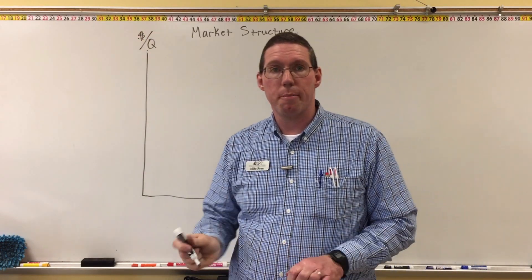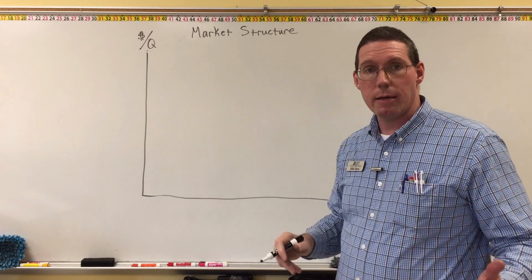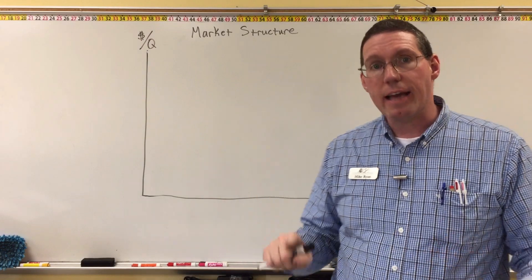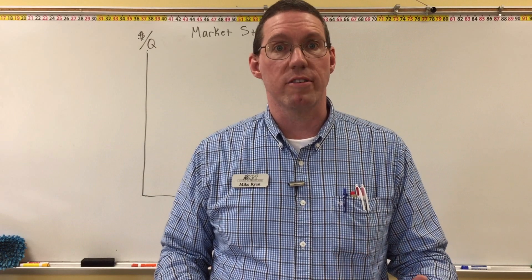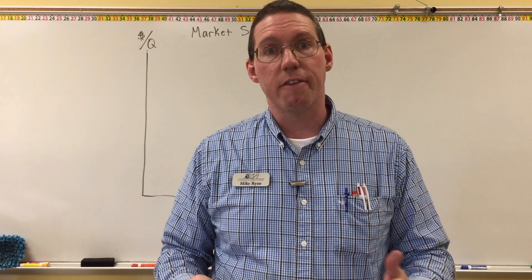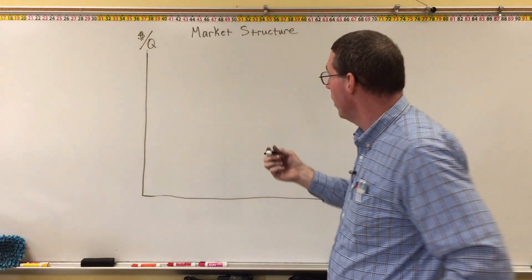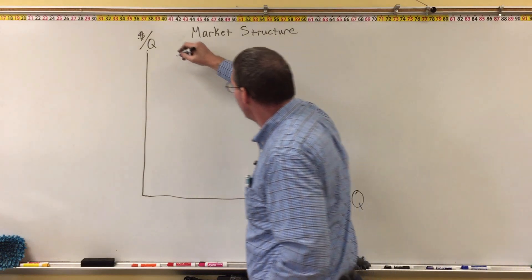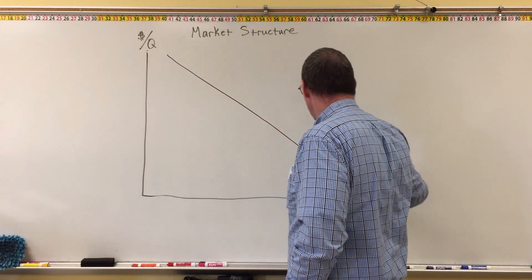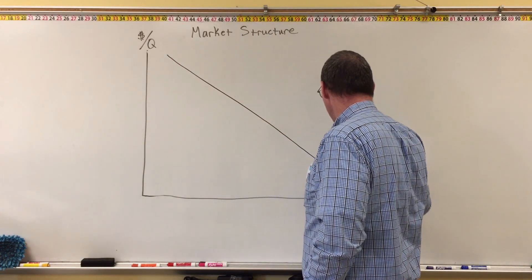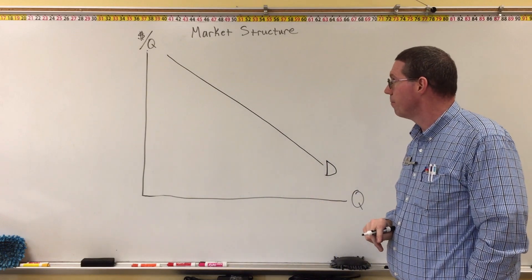The first thing we learned about was the demand curve. We know that demand is a negative relationship between price and quantity. A negative relationship means a downward sloping curve, and so there's our demand curve.